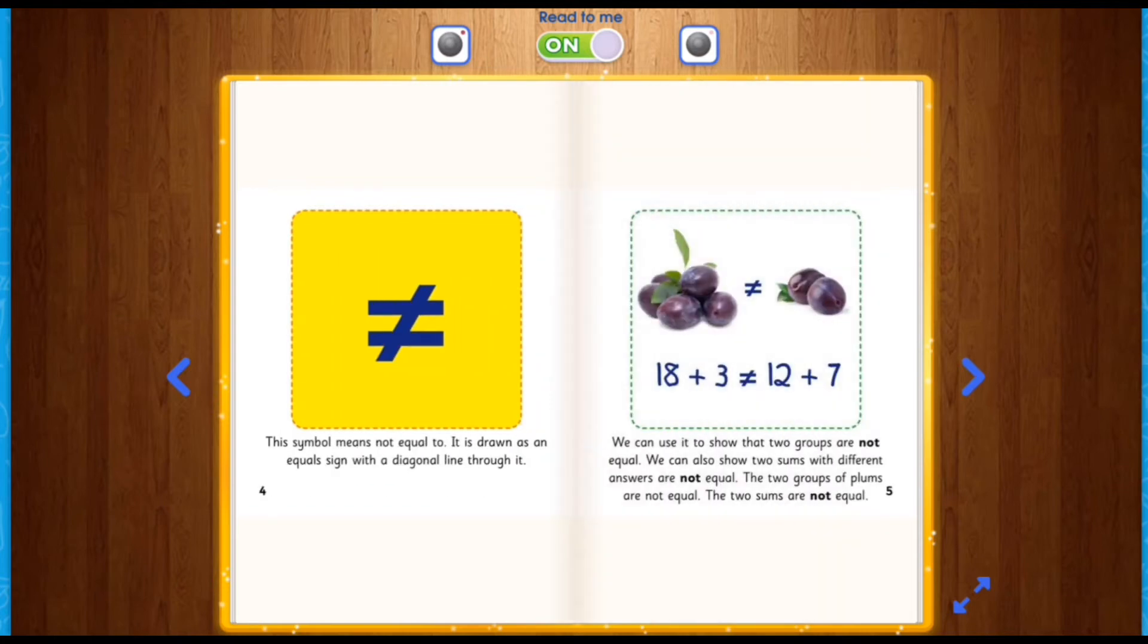This symbol means not equal to. It is drawn as an equal sign with a diagonal line through it. We can use it to show that two groups are not equal. We can also show two sums with different answers are not equal. The two groups of plums are not equal. The two sums are not equal. Not equal.